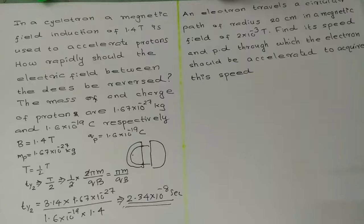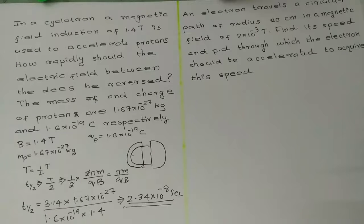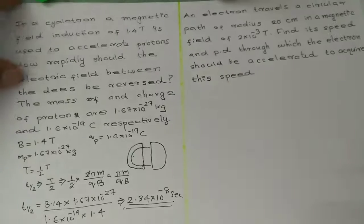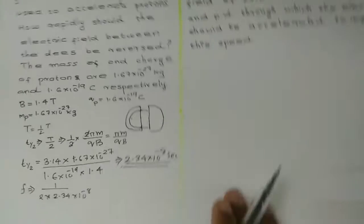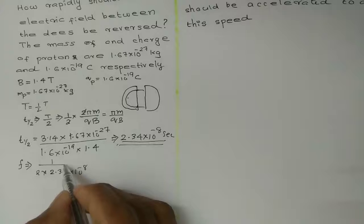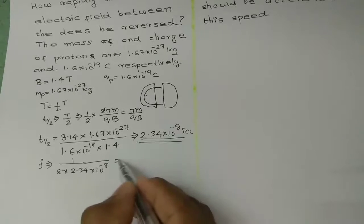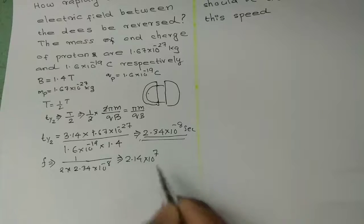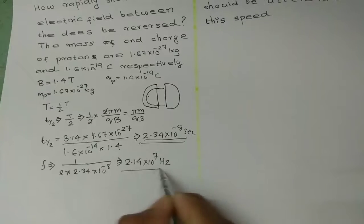In other words, the frequency of the applied field should be f = 1 divided by (2 × 2.34×10⁻⁸), which equals 2.14×10⁷ hertz.